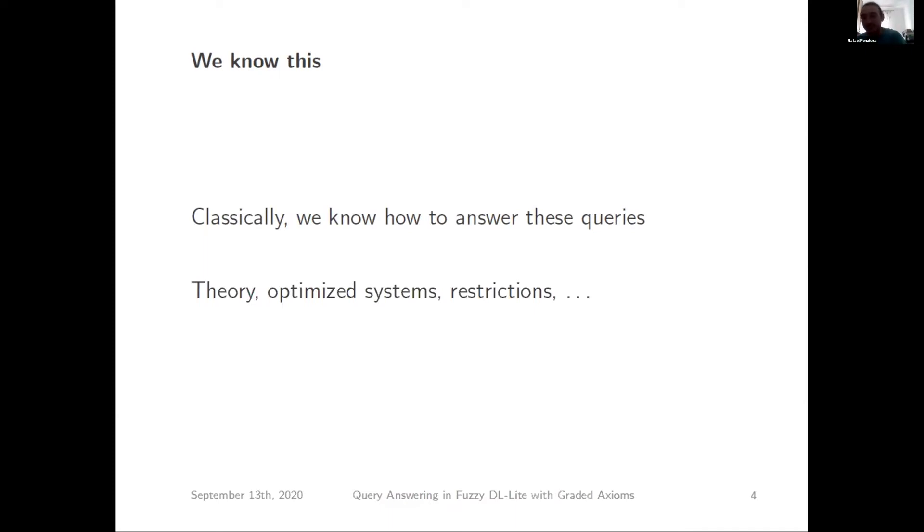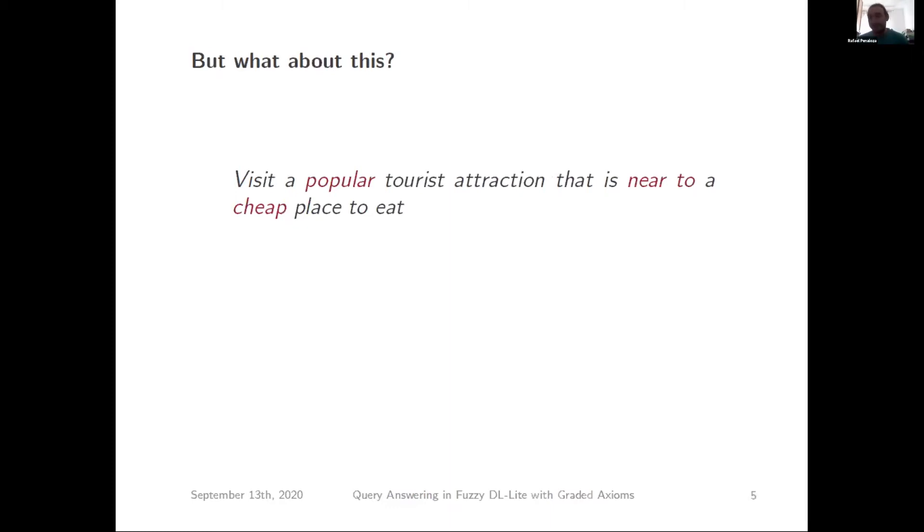But what happens when you're interested in a slight variation of this query? I don't just want an arbitrary tourist attraction, I want a popular one. I don't have time, so I want a popular tourist attraction. I'm a cheaper student, so I want a cheap place to eat, and it should be near this tourist attraction. Now, the problem is how do we evaluate what is popular, what is near to, what is cheap? We have these terms that are imprecise. So we're trying to handle this kind of imprecision.